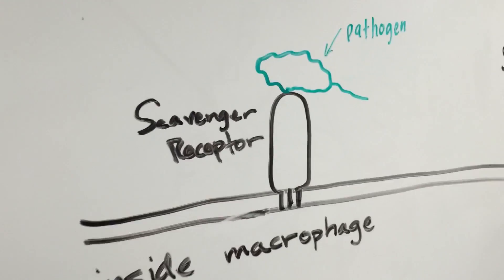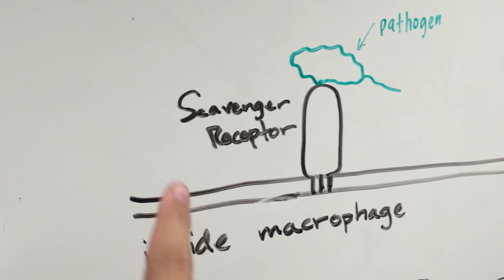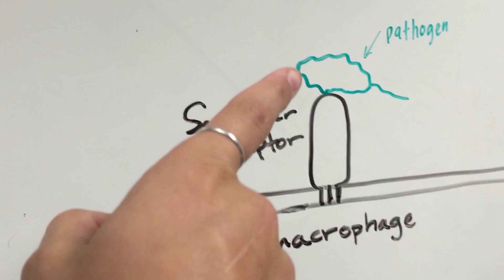The way that the receptor recognizes pathogens and LDLs is that part of the receptor on the outside of the cell binds to the pathogen or the bad cholesterol molecule.